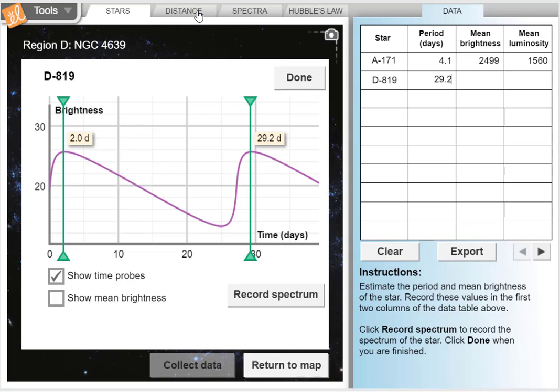I can again use that, I can see the mean brightness and just collect that data and see that it's 19.43, which is a lot dimmer than the last star that we looked at.